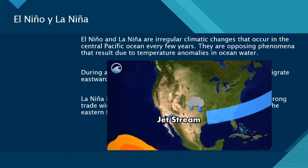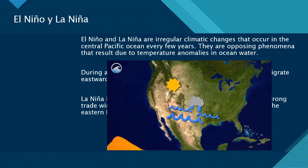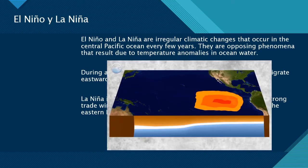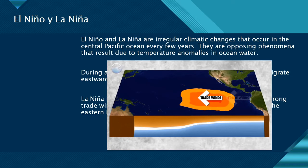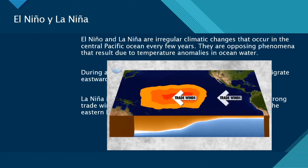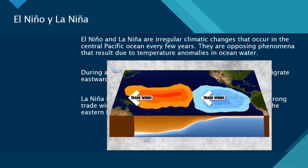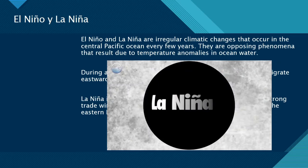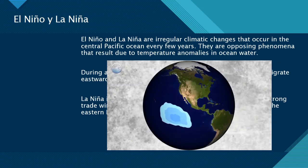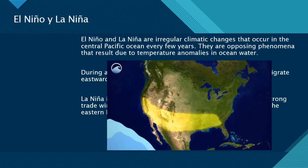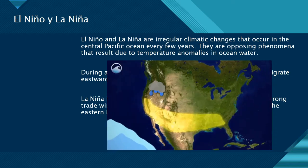El Niño brings flooding to the southern United States and warmer, drier conditions over parts of the Pacific Northwest, northern U.S., and Canada. Eventually, those trade winds pick up again and sometimes become even stronger than normal, blowing the warm water back into the western Pacific and restarting the upwelling of cool water in the eastern Pacific. These strong trade winds are a signature of La Niña — unusually cold conditions in the tropical Pacific that displace the jet stream northward. La Niña can lead to drought in the southern U.S. and cooler temperatures, heavy rains, and flooding in the Pacific Northwest.